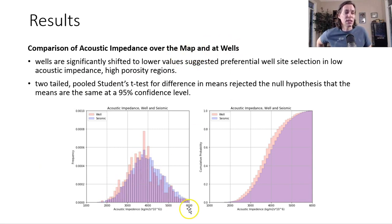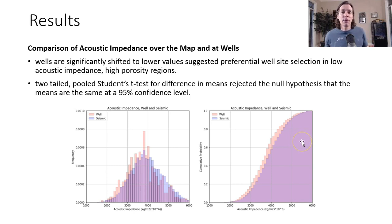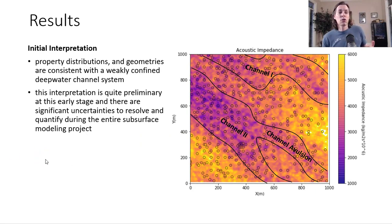Comparing acoustic impedance over the entire grid map versus the well data, the distributions are significantly shifted — wells are in red, blue for seismic. You can see a strong degree of overlap but a clear shift. The CDFs make it clear that there is a shift to higher acoustic impedance when you look at the seismic, indicating preferential drilling in the low acoustic impedance, high porosity locations.